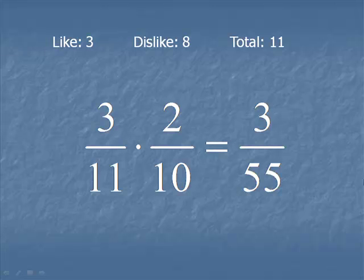The probability you like the first one, there are three you like out of 11 total. When we select that one that you like, that leaves two that you like out of 10 total. When we multiply these two fractions and reduce to lowest terms, we get three out of 55.